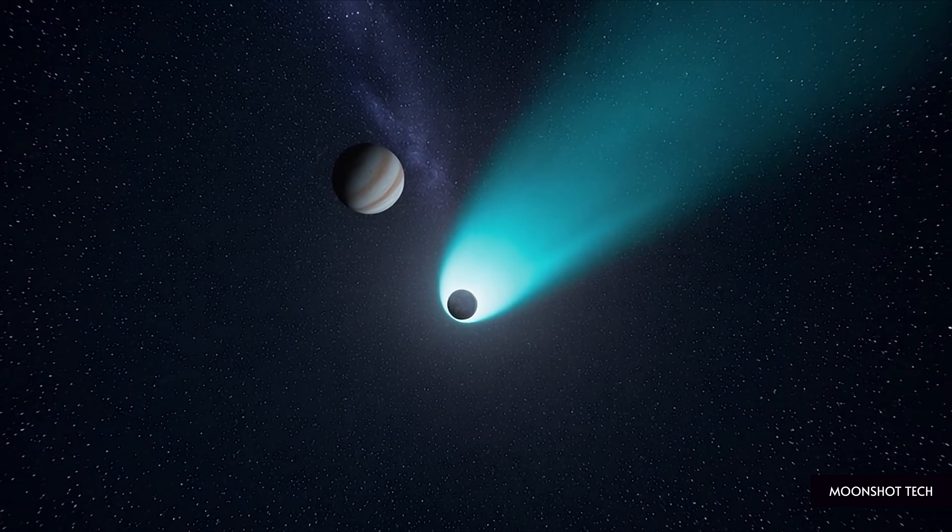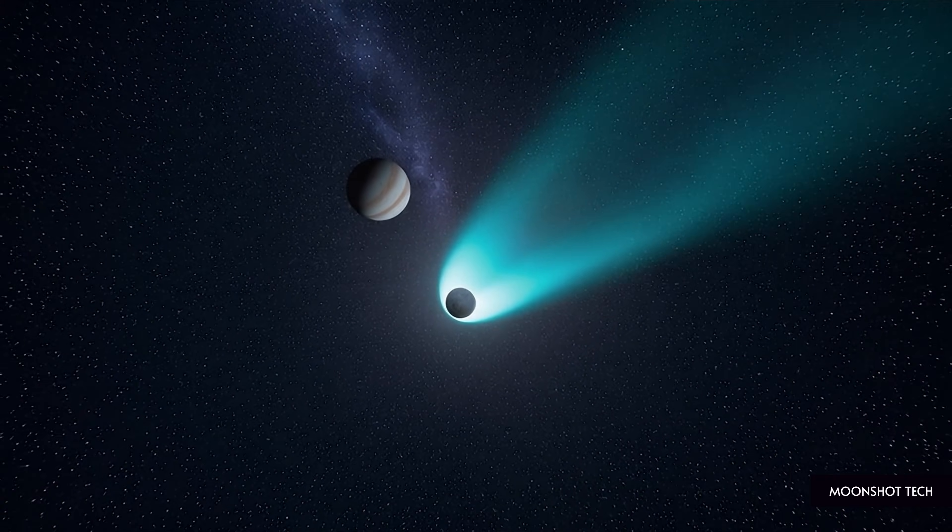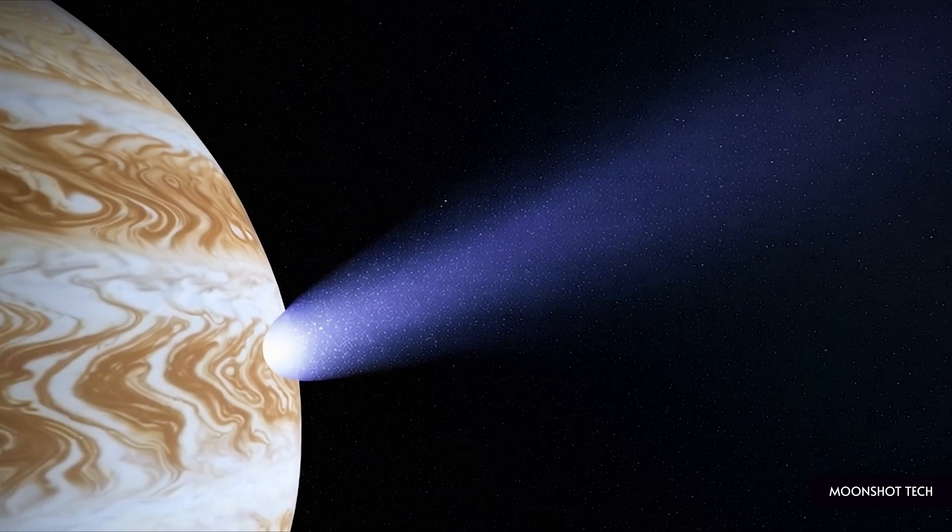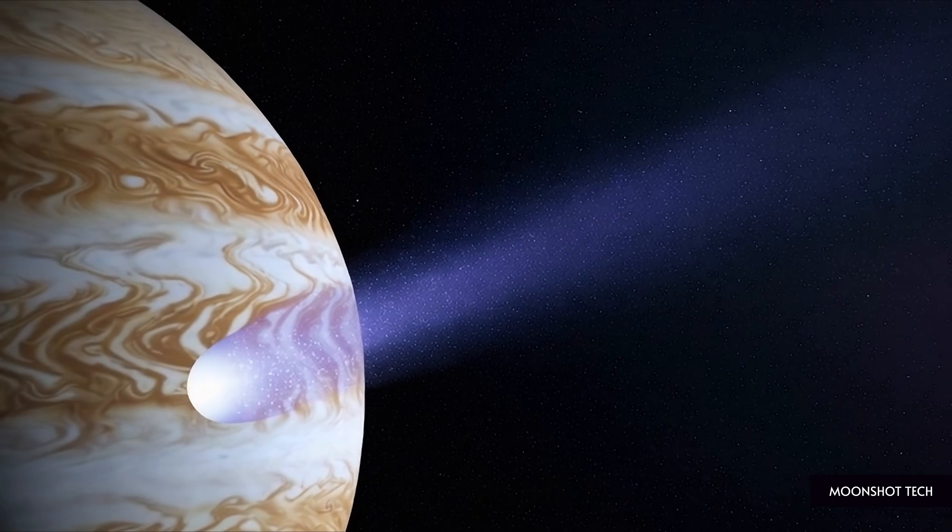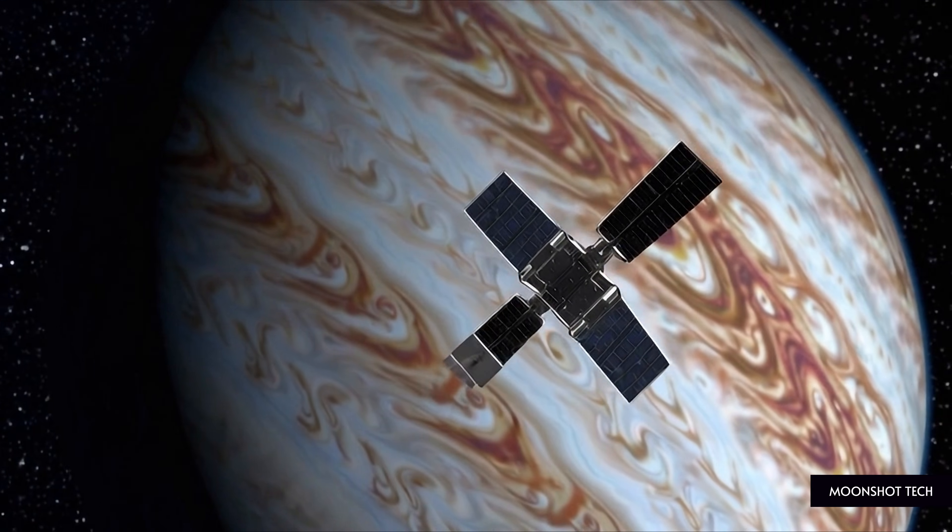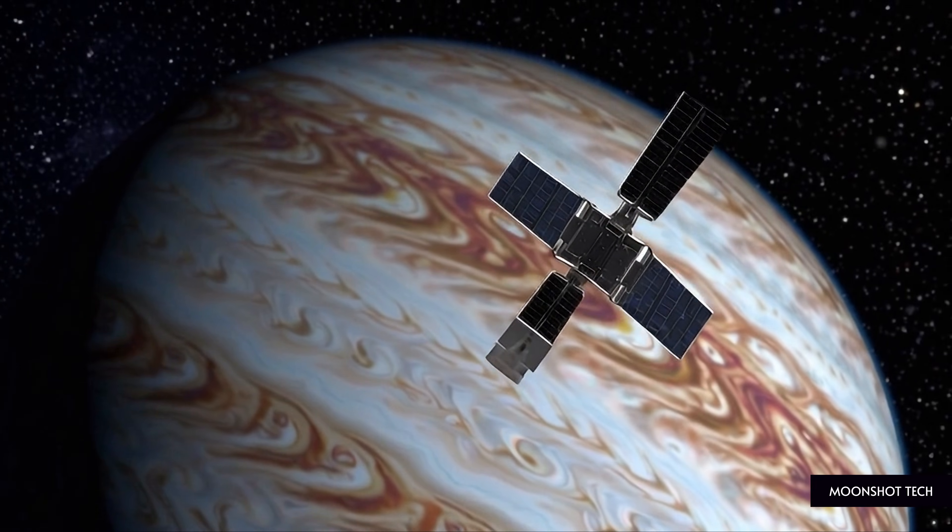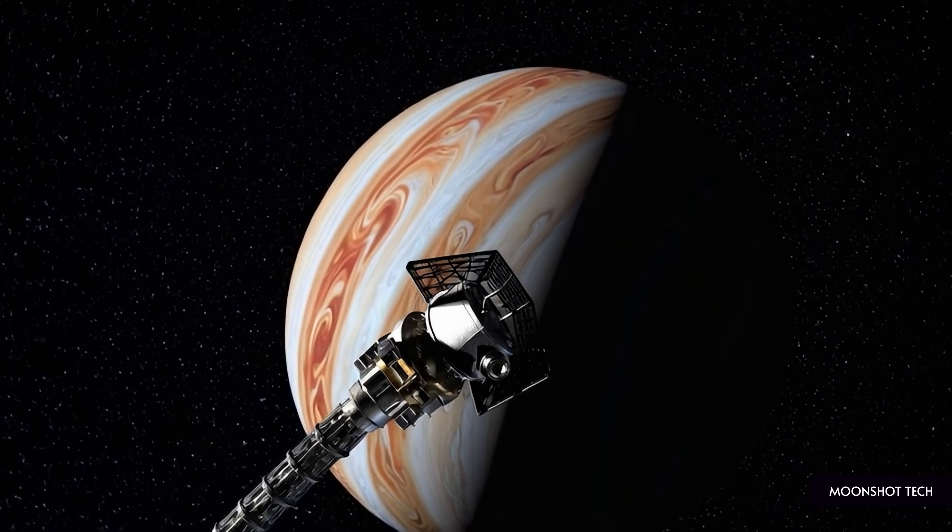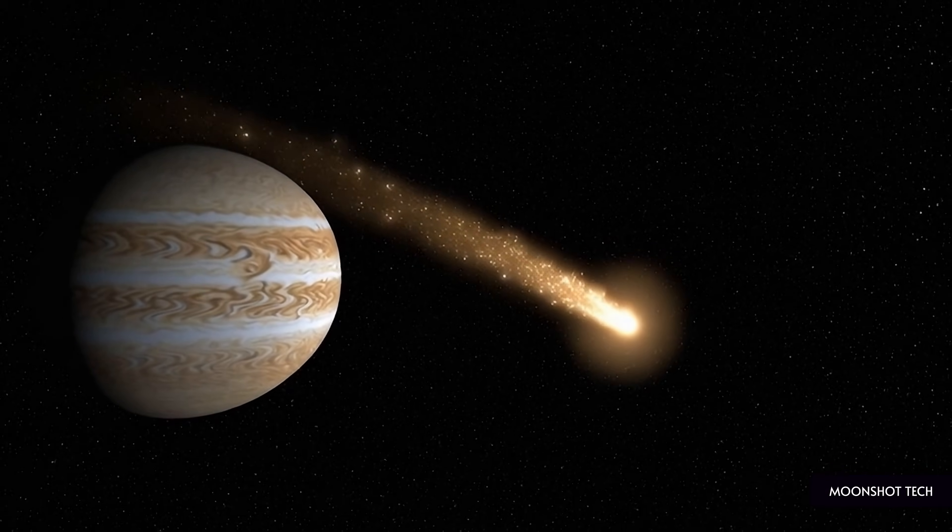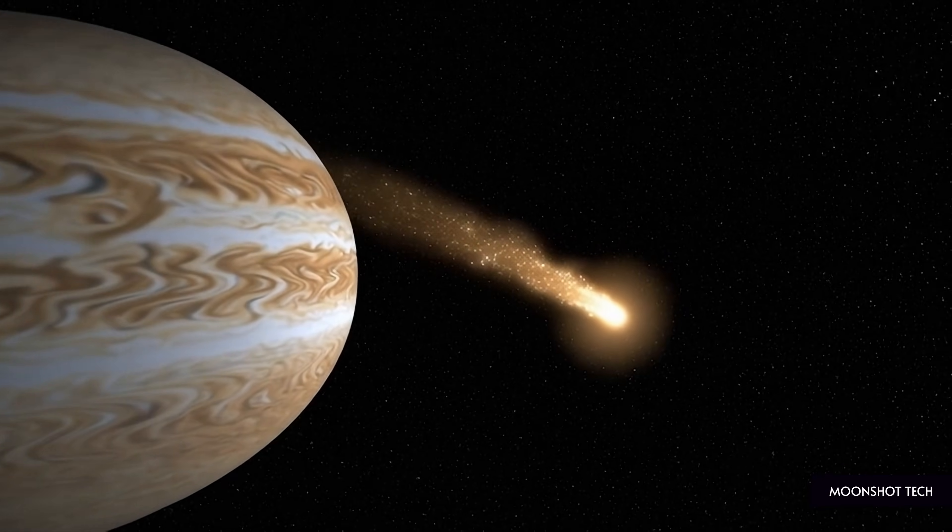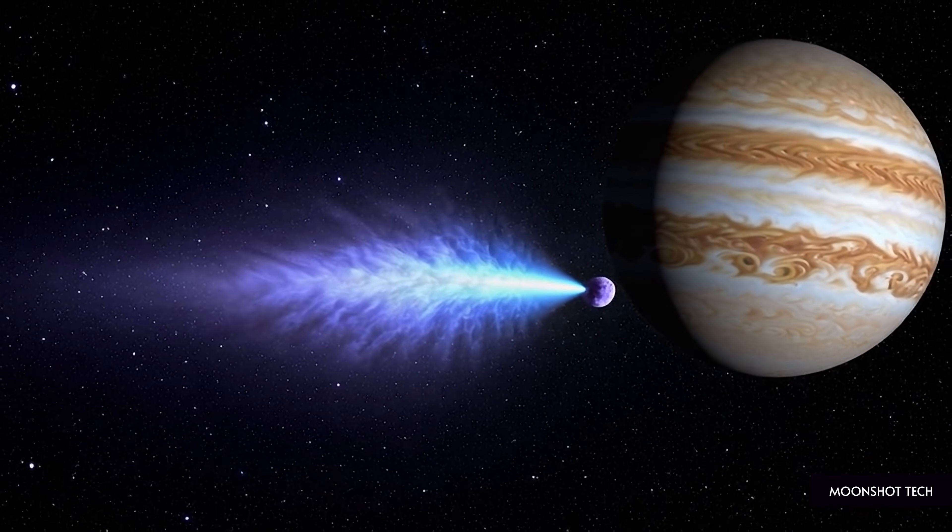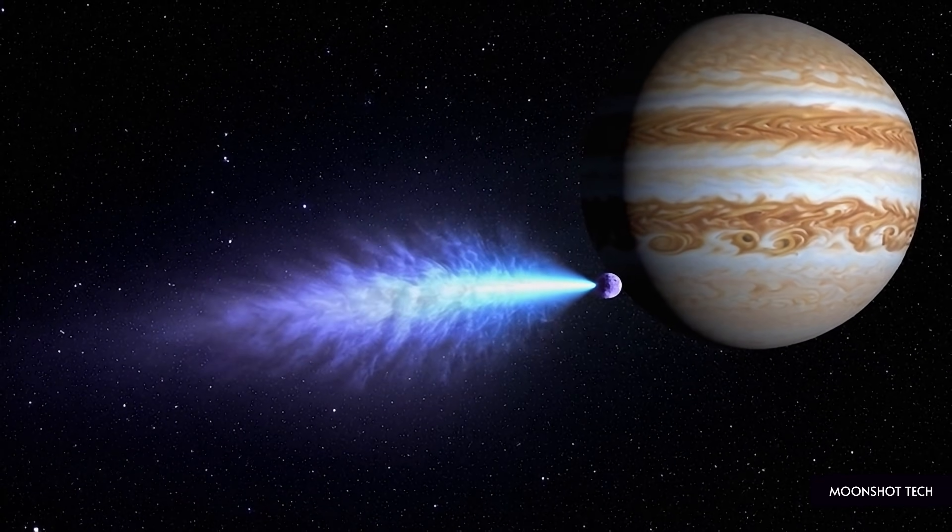After the flyby, Jupiter's gravity will accelerate 3i Atlas to even higher speeds, sending it back into interstellar space. Within months, it will be too faint for detailed study. Within a year, it will cross Saturn's orbit and fade from view. Within a decade, it will leave the solar system entirely, and then it is gone. Back into the darkness between stars, continuing a journey that may never end. And whatever we discover at Jupiter will determine how this story ends.